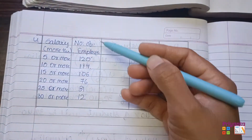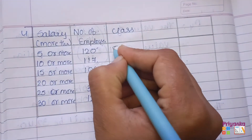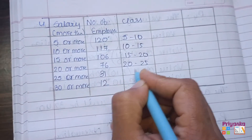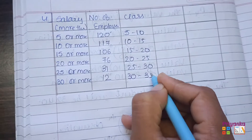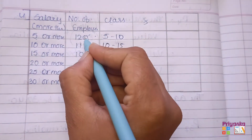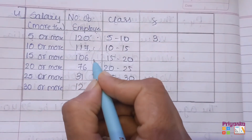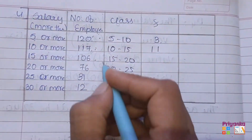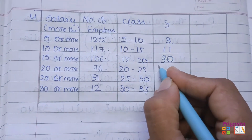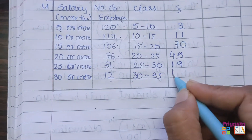I set up all the information from the question. Salary is given as 'more than', so we form class intervals: 5–10, 10–15, 15–20, 20–25, 25–30, and 30–35. To find frequency, we subtract: 120 minus 117 is 3; 117 minus 106 is 11; 106 minus 76 is 30; 76 minus 31 is 45; 31 minus 12 is 19; and the last one is 12.